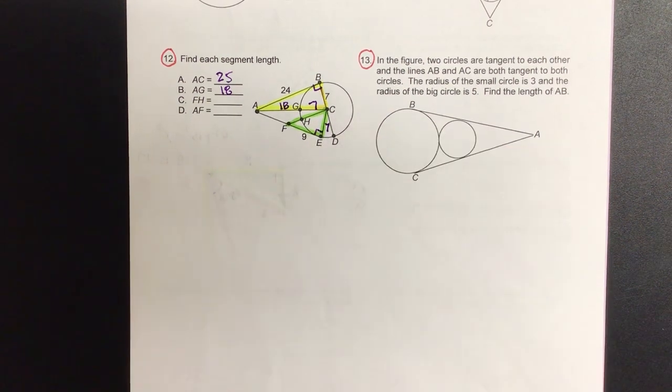Why? Let's do Pythagorean theorem real quick. 7 squared plus 9 squared. Okay. Next time, next time, sounds good.